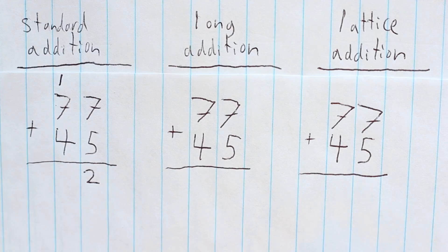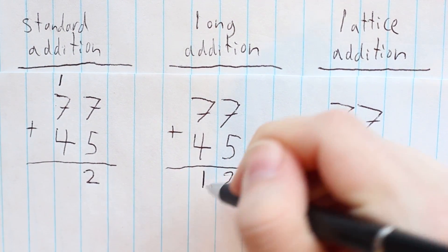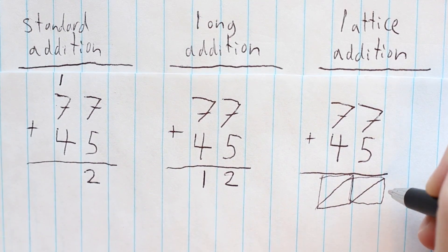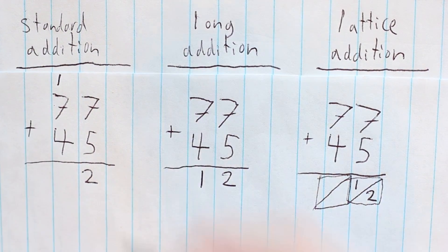In long addition, sometimes called the partial sums algorithm, you just write 12. And in the lattice method, you write 12, but in a little box with a diagonal line through it. Then you do the next column.